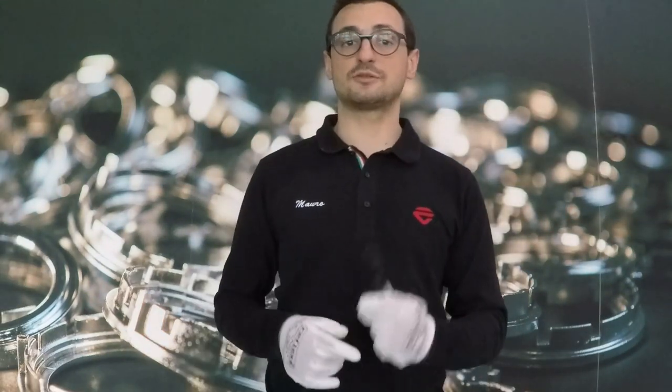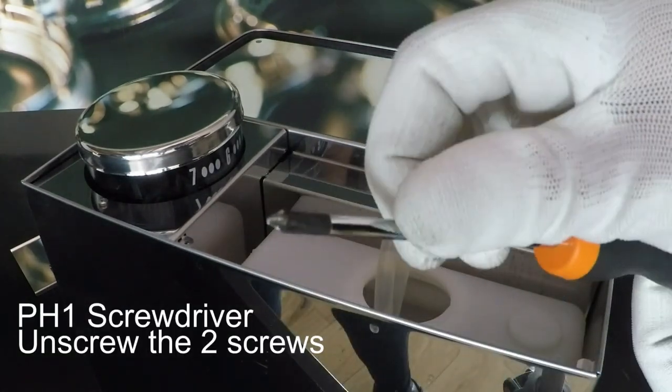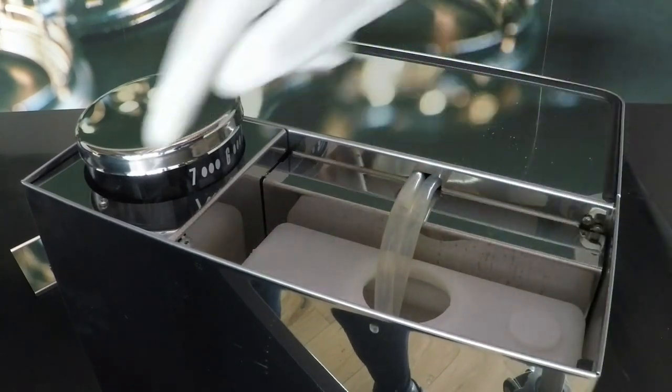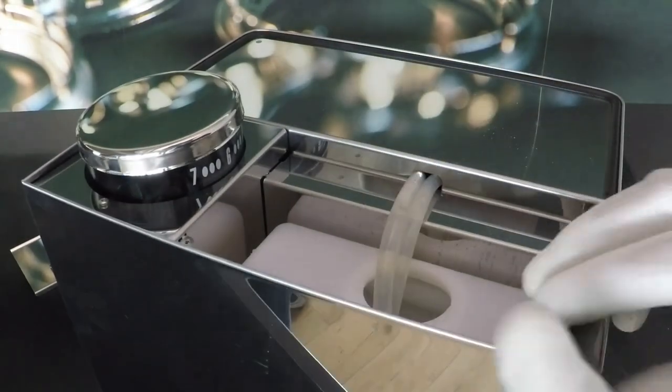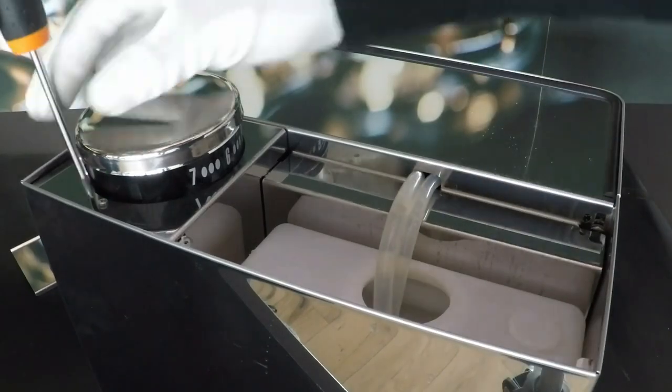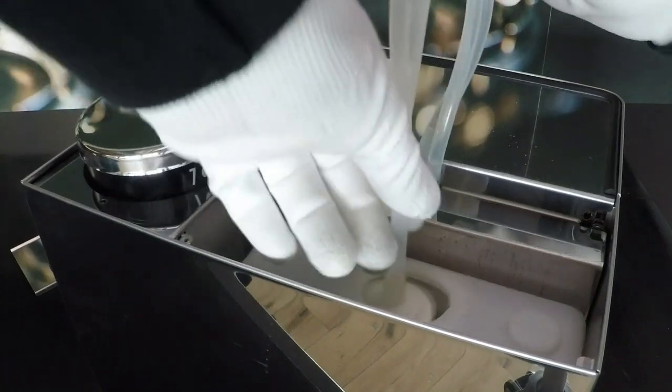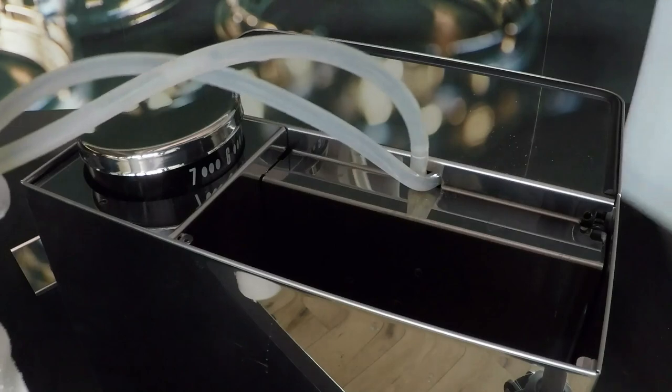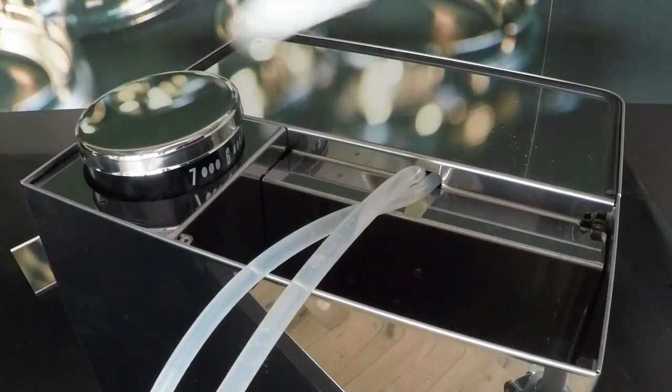Disconnect the machine to the power supply. Use the screwdriver PH1 to unscrew the two screws of the top of the machine and remove the water tank. Remove also the resin filter and the cover.